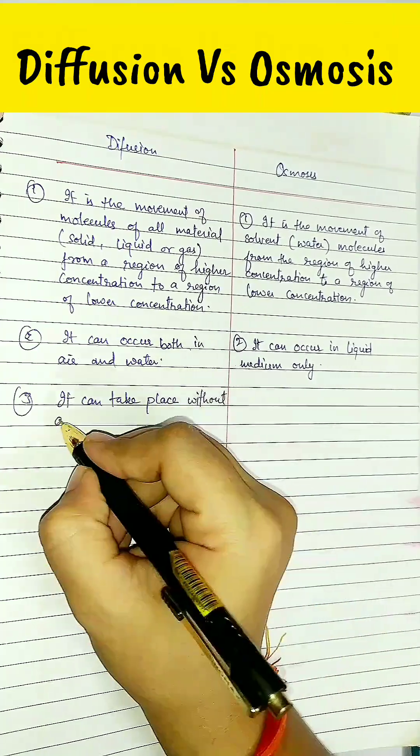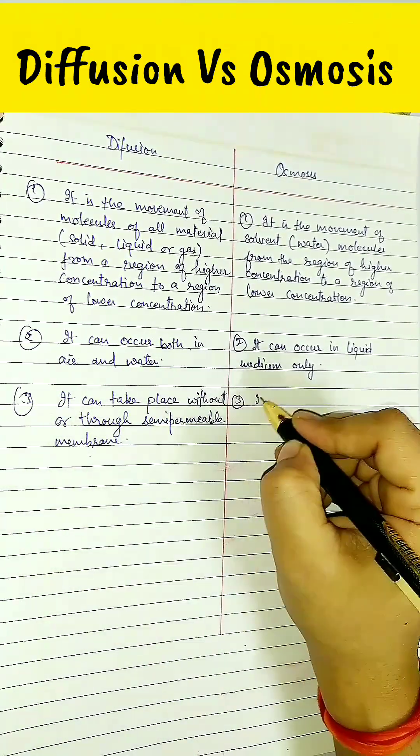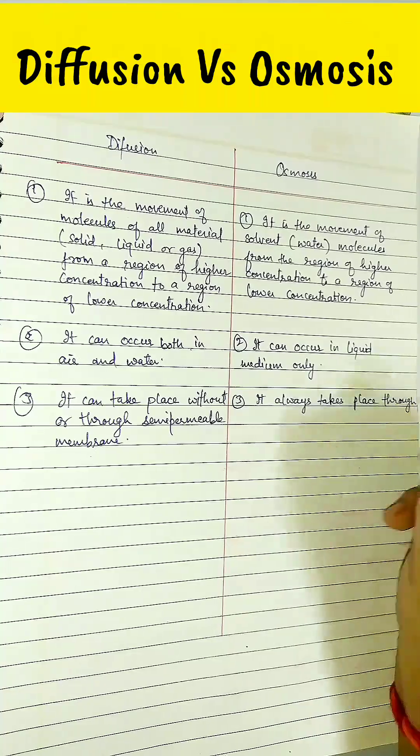It can take place with or without a semi-permeable membrane, but osmosis needs a semi-permeable membrane.